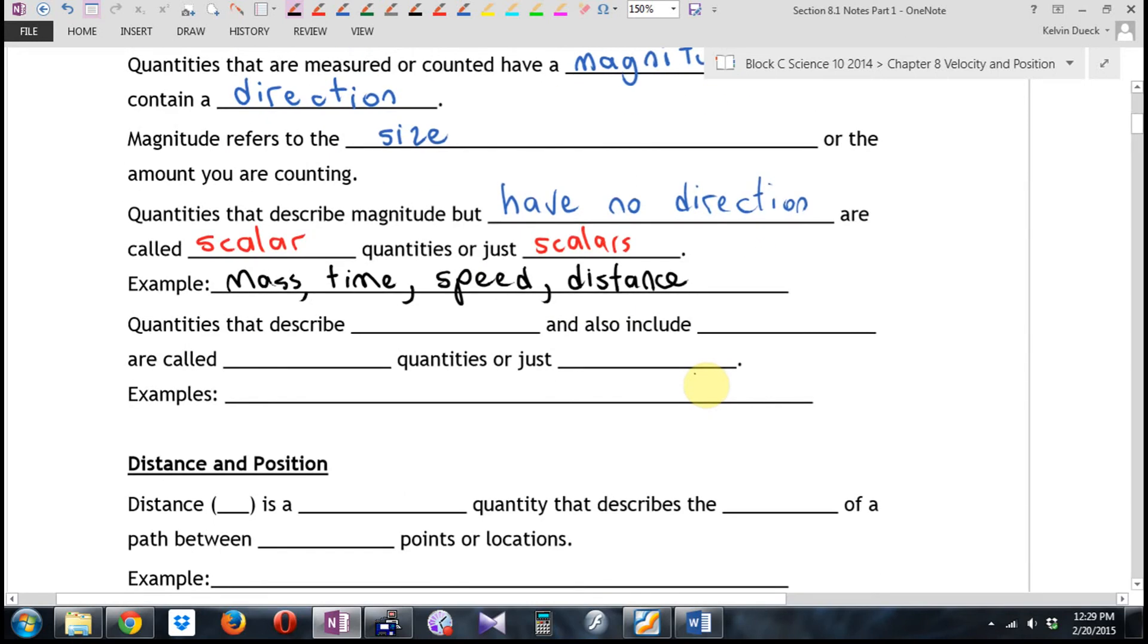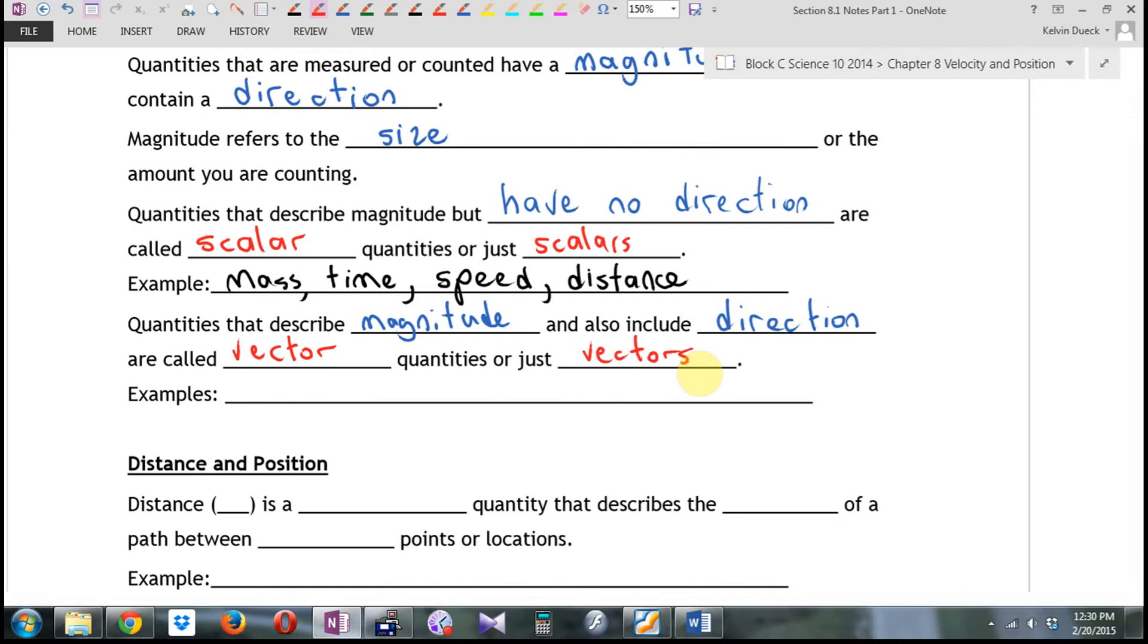Quantities that describe magnitude size, but also include a direction, are called—oh, I'm going to do this one in red, too, because it's an important word—vector quantities, or just vectors, for short. We say in physics, everything is a scalar or a vector. And that becomes, in physics 11, and especially in physics 12, very important, because the rules for doing mathematics or calculations with vectors are very different from the rules for doing mathematics or calculations with scalars.